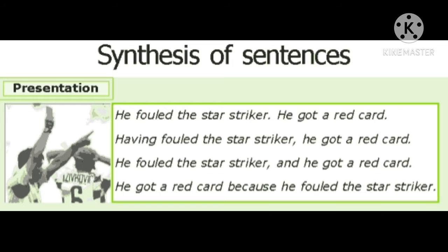He fouled the star striker. He got a red card. Having fouled the star striker, he got a red card. He fouled the star striker and he got a red card. He got a red card because he fouled the star striker. You can see that I am using four different types of sentences but the meaning of these four sentences is the same.